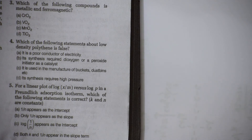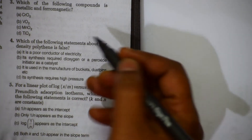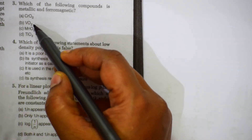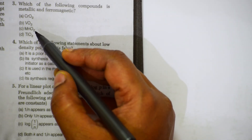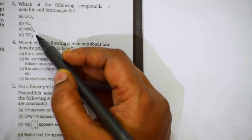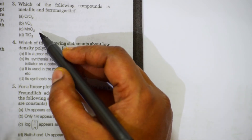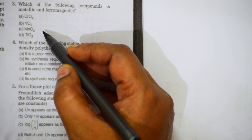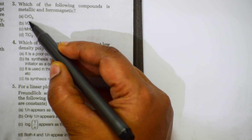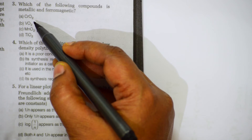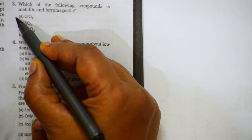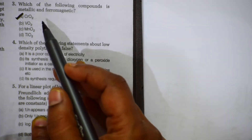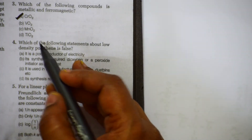Question 3: which of the following compounds is metallic and ferromagnetic? Options: CrO₂, VO₂, MnO₂, and TiO₂. You should remember that iron, cobalt, and nickel show ferromagnetism at room temperature. CrO₂ is special — it is both metallic and ferromagnetic in nature, which is why it is used in magnetic tape cassettes. So the answer is CrO₂.